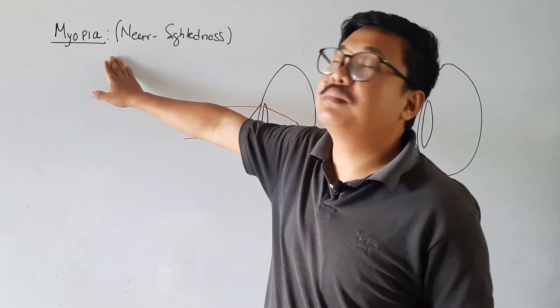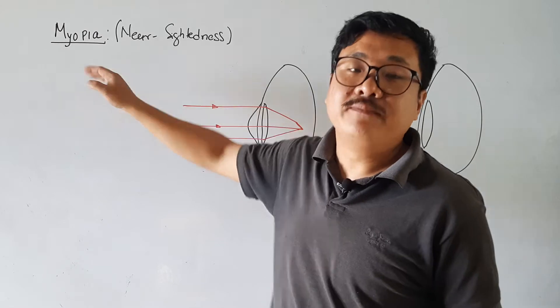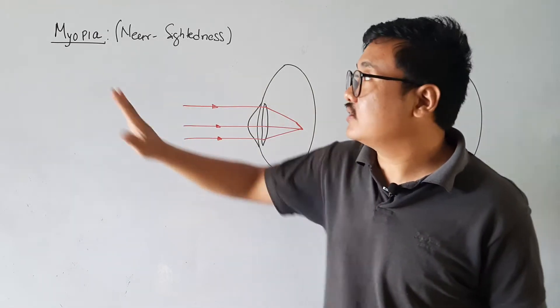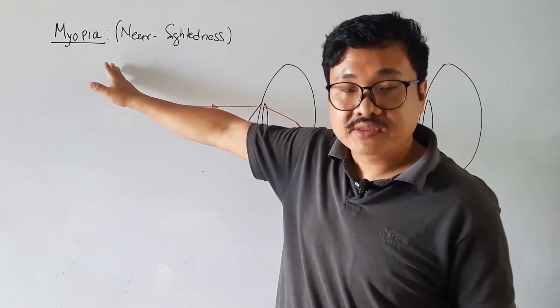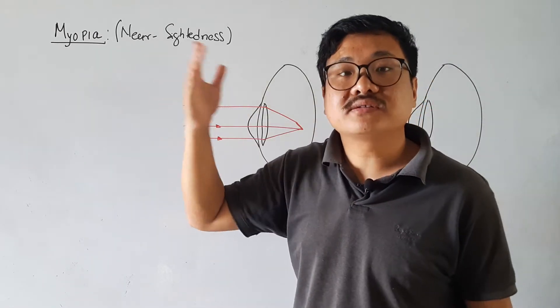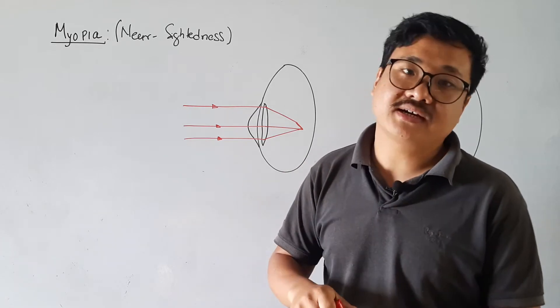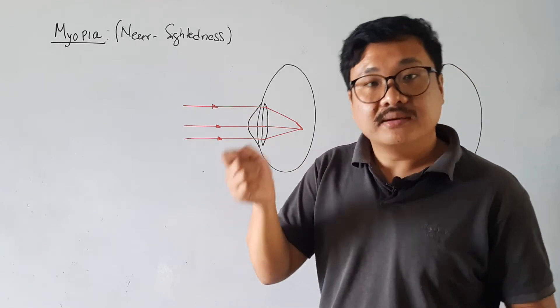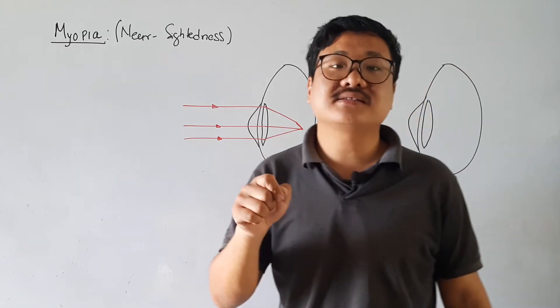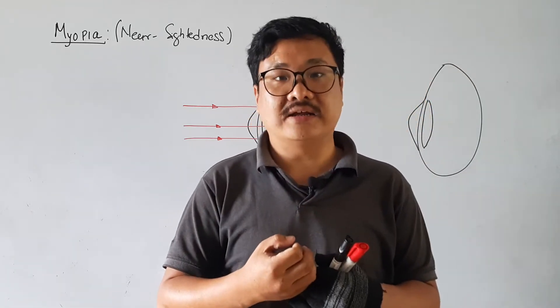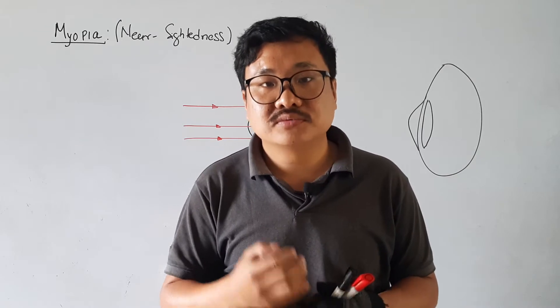A person suffering from myopia cannot see distant objects clearly, but can see nearby objects clearly.